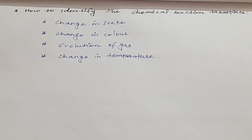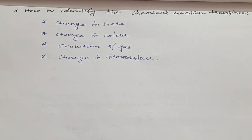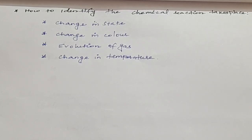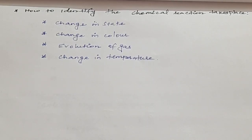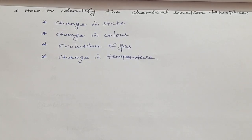How to identify a chemical reaction? The following observations help us determine whether a chemical reaction has taken place. The first one is change in state — for example, solid into liquid, liquid into solid, liquid to vapor, or solid to vapor. These help to identify whether a chemical reaction has occurred.